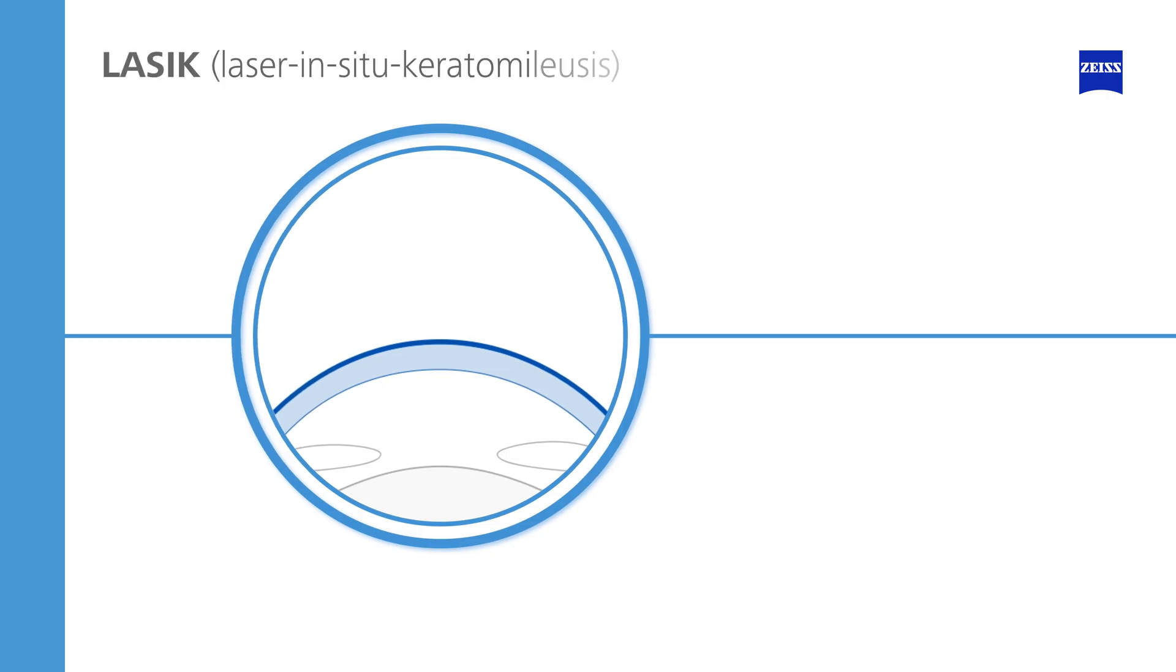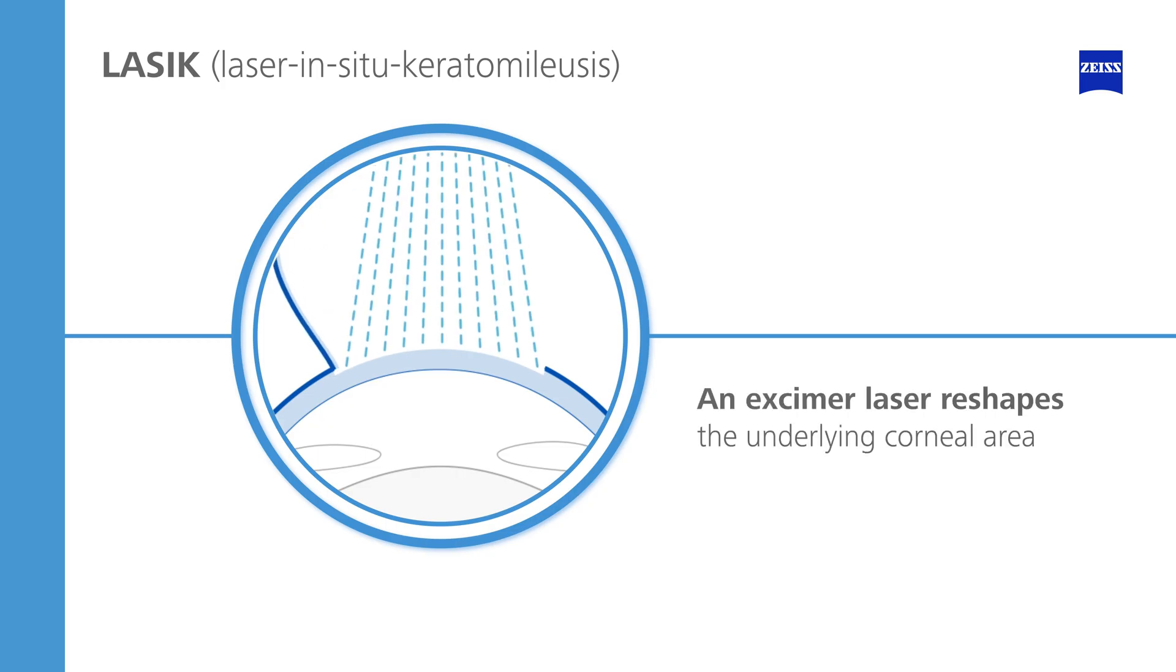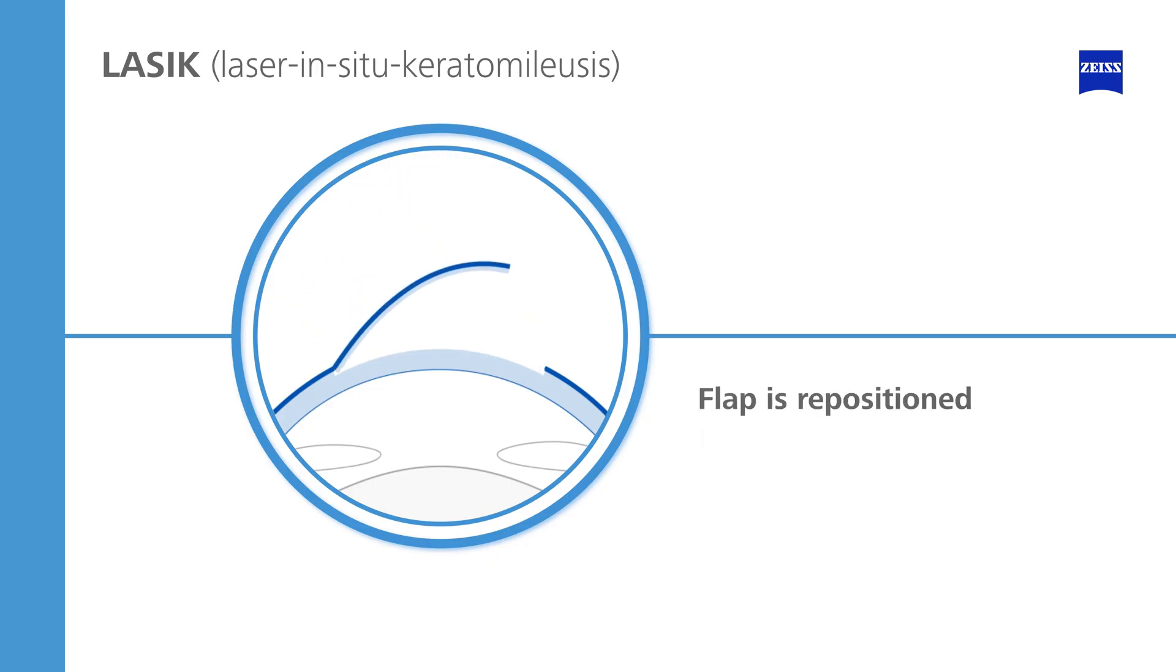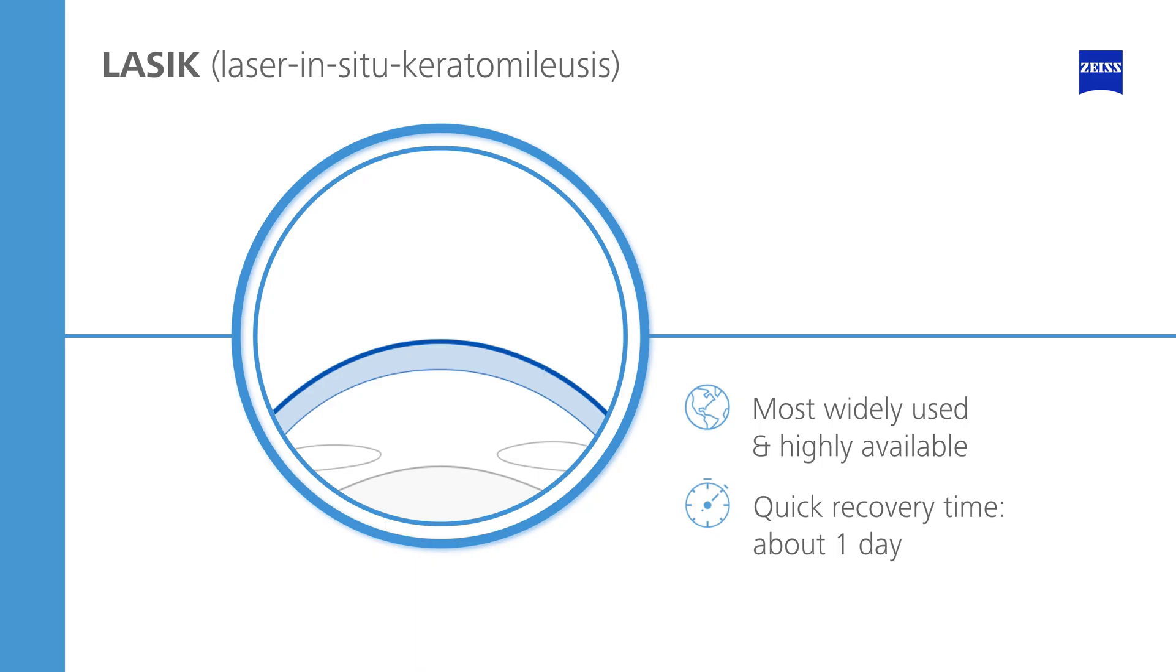During LASIK, a flap is created on the cornea and lifted to the side. An excimer laser then reshapes the underlying corneal area. Afterwards, the flap is repositioned. The epithelium gradually grows over the opening. LASIK is a widely used and highly available LVC option. It offers a quicker recovery of vision, typically within a day.